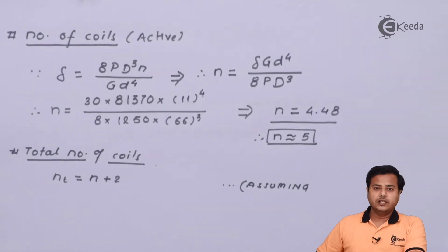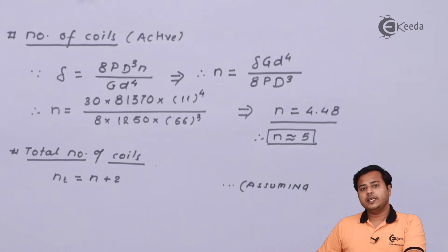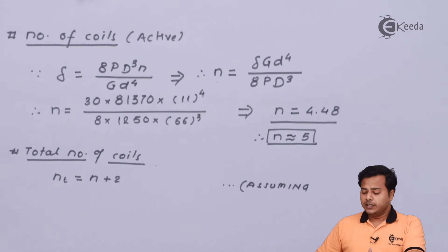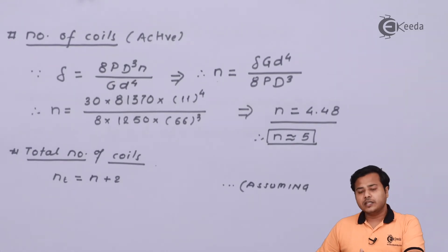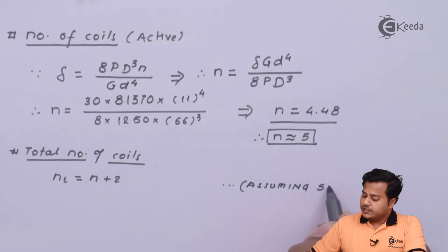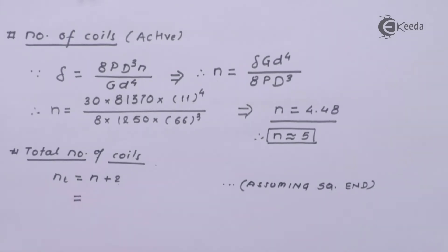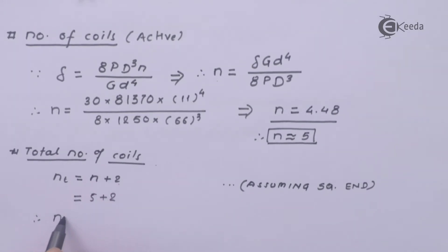Let us find out the total number of coils. The total number of coils includes not only the active coils but also the end coils. For this application we assume square ends, so 2 coils have to be added to the active coils. That becomes 5 plus 2, giving a total number of coils equal to 7.